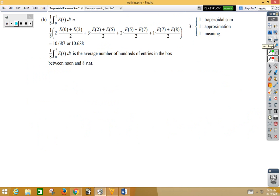Let's see how AP scored that. Three points. The first point for the trapezoidal sum, that would be using the formula. Notice they just used a function notation here instead of using the actual values, which is what I did. The approximation, 1 point, and then the meaning, which was the average number. Here it's an average because of the 1/8 in hundreds of the entries in the box between noon and 8 PM.